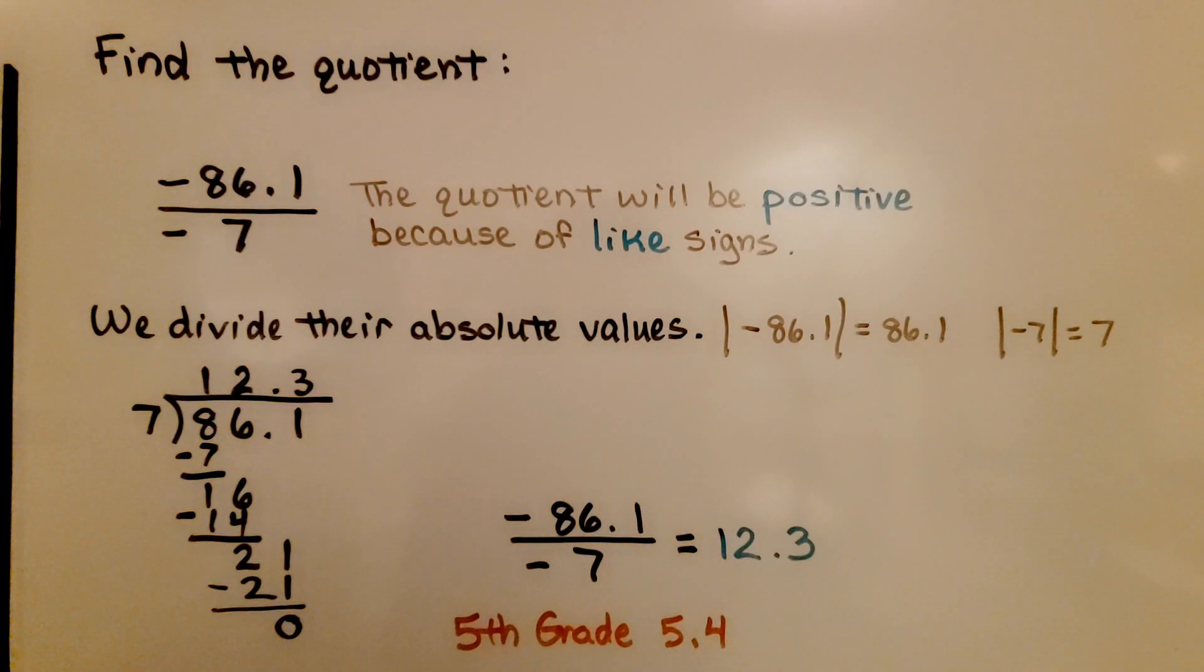Here it's telling us to find the quotient. We have negative 86.1, negative 86 and 1 tenth, and we need to divide it by negative 7. The quotient will be positive because of like signs. They're both negative. We divide their absolute values.